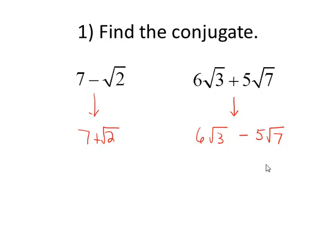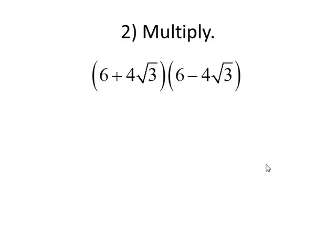Let's focus on how to multiply conjugates. These two expressions are conjugates. Notice same two terms but the second term has the opposite sign. We can multiply this by distributing or using what many people refer to as the FOIL method.